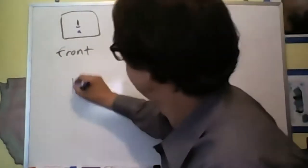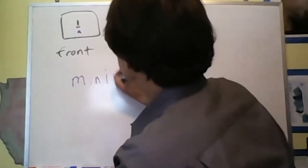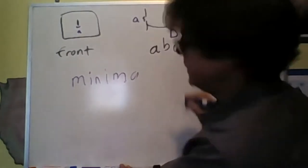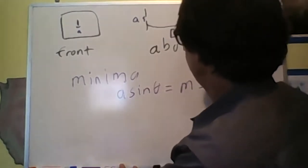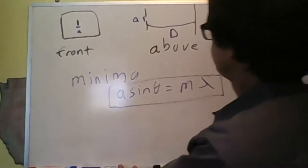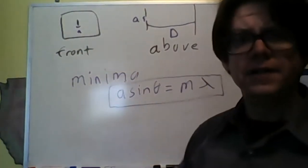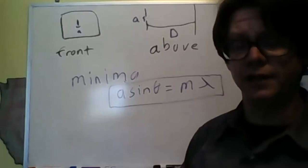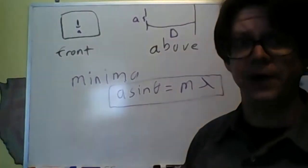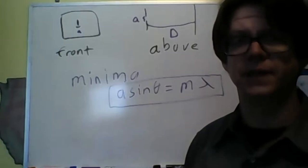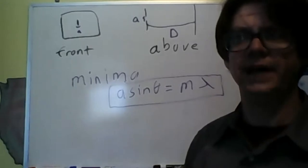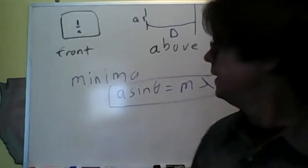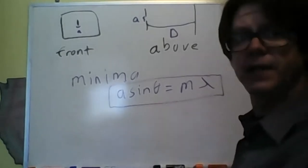The minima are found at A sine θ = mλ. Notice that this is really similar to the formula for constructive interference in a two or multi-slit system. Do not be led astray by the similarity between the formulas — this is for finding destructive interference in a single slit.